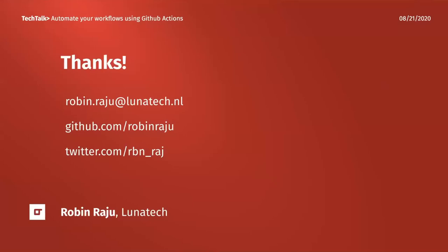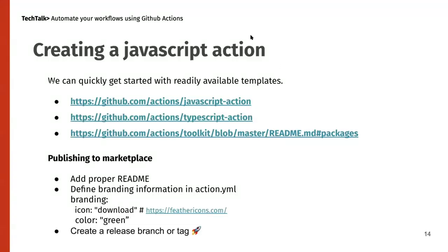Q: When you publish to the marketplace, do you go through an approval process? No, you can simply publish — you just create a release and it will be automatically visible in the marketplace. There are certain criteria though — you should have a proper README file, and you must have the branding section in action.yml with an icon and color defined. GitHub checks those, and if all are present it publishes to the marketplace.